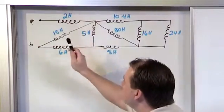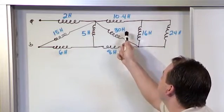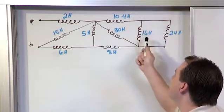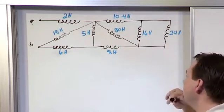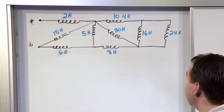So we have 2 Henrys, 15 Henrys, 6 Henrys, 5 Henrys, 8 Henrys, 30 Henrys, 10.4 Henrys, 16 Henrys, and 24 Henrys. We'd like to basically simplify that.